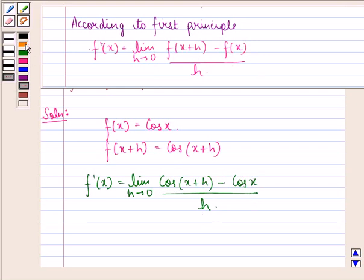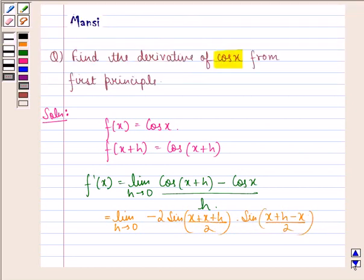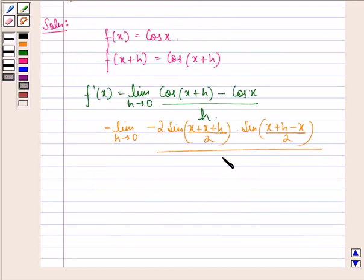This is equal to limit h approaching 0, minus 2 sin[(x+x+h)/2] times sin[(x+h-x)/2], and this whole divided by h.